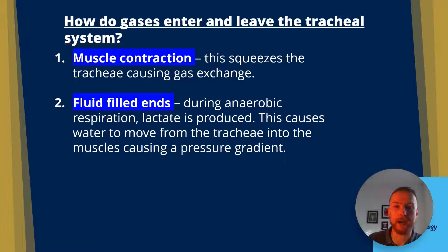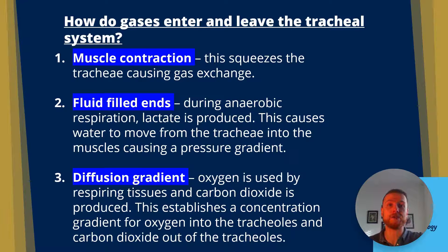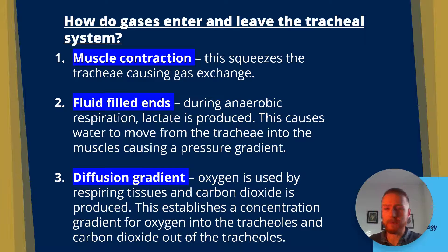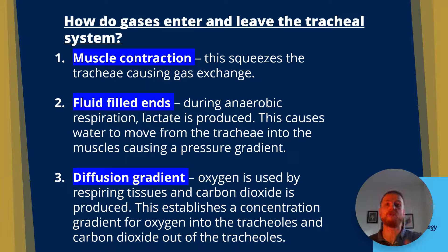Next, we have a diffusion gradient. Oxygen is used up by respiring tissues, so there'll be a concentration gradient from oxygen in the atmospheric air to where it's needed in the respiring tissues, and vice versa for carbon dioxide. Carbon dioxide is produced during respiration, so that gives a higher concentration of carbon dioxide where respiration is taking place relative to the atmospheric air.